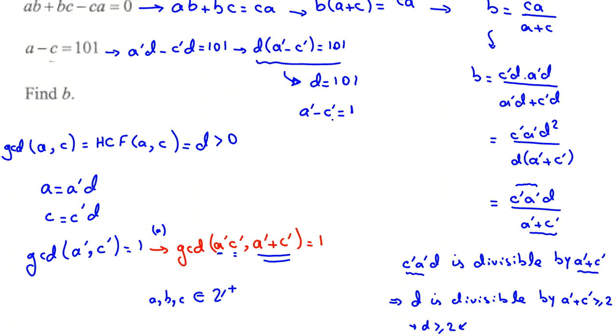So we want to find a prime and c prime. Because D, 101 is divisible by this number, a prime plus c prime is a divisor of 101 and is at least 2. So from this one, 101 is divisible by a number that is at least 2. The only possible case is a prime plus c prime should be 101. So a prime plus c prime equals 101.